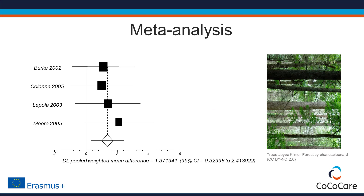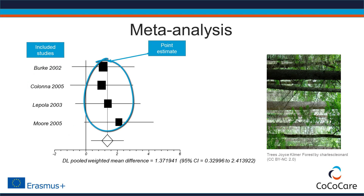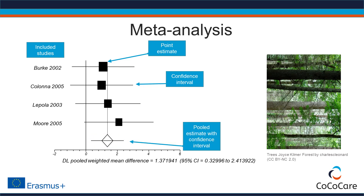How can we interpret a forest plot? The right-hand side of the figure presents the included studies — in this case, the meta-analysis included four studies. The black squares represent the point estimates of the included studies, and the size of each square corresponds with the size of the study. The horizontal lines depict the confidence intervals of the point estimates. The diamond at the bottom of the forest plot represents the pooled result of the meta-analysis with its confidence interval.